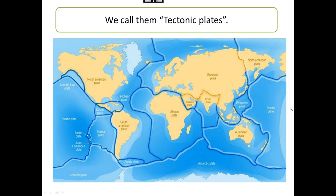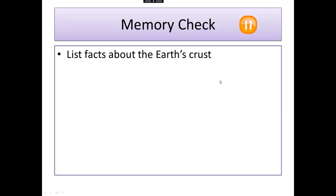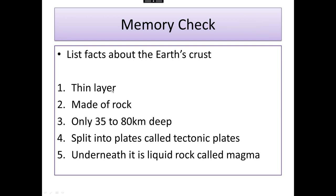What we're going to concentrate on today is what lies beneath this crust. Pause the video and see how many facts you can list about the earth's crust. Here are the key facts: it is a thin layer made of rock, only 35 to 80 kilometres deep. It is split into plates called tectonic plates, and underneath that thin crust of rock is liquid rock called magma.